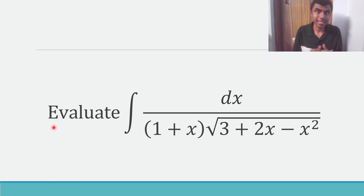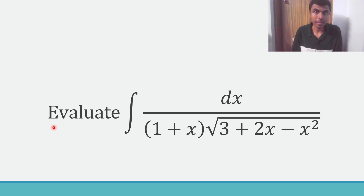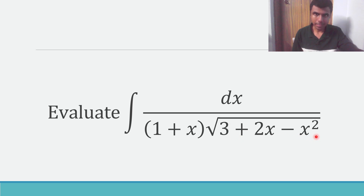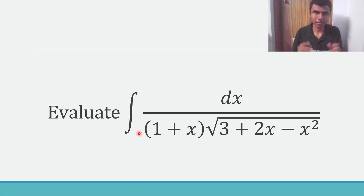Hello learners, I'm Akash. I completed my B.Tech from NIT Rautjala in the year 2020. Currently I'm a mathematics teacher. Now let us see how to solve this given question. Here we need to evaluate the integral dx by (1 plus x) times the square root of (3 plus 2x minus x squared). I'm going to go a bit slow and make it easy for you, so please stay with me to get a crystal clear understanding.